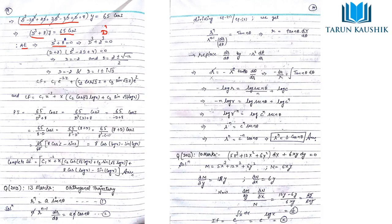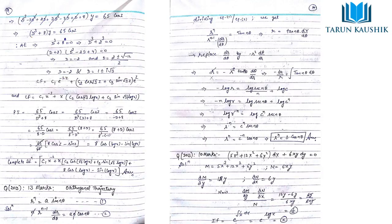To solve D³ + 8 = 0, do not simply set D = −2 three times. Instead, factor using the sum of cubes: (D+2)(D² − 2D + 4) = 0. This gives D = −2, and D = 1 ± i√3. The CF = c₁e^(−2z) + e^z[c₂cos(√3·z) + c₃sin(√3·z)]. Converting back to x by replacing e^z with x gives the complementary function in x.